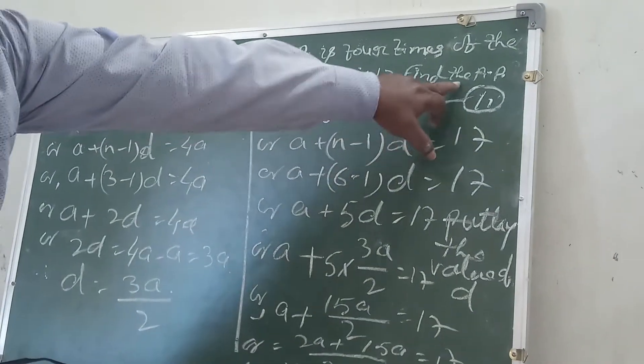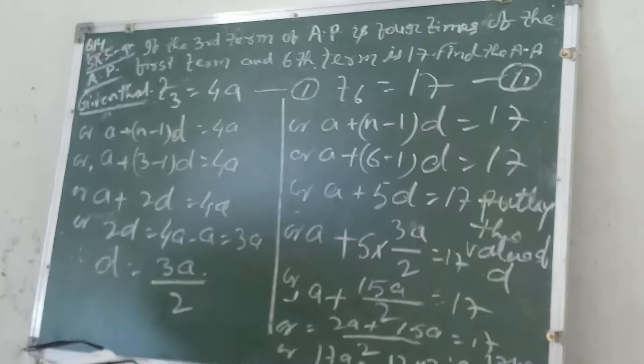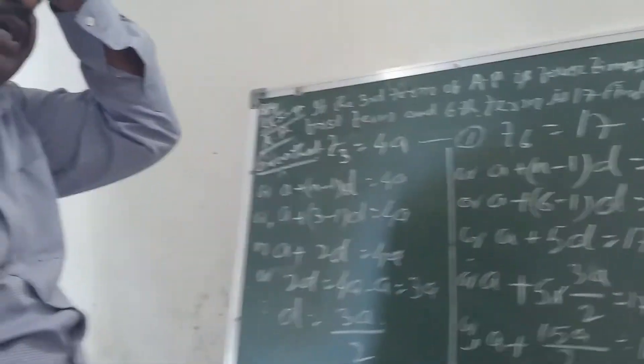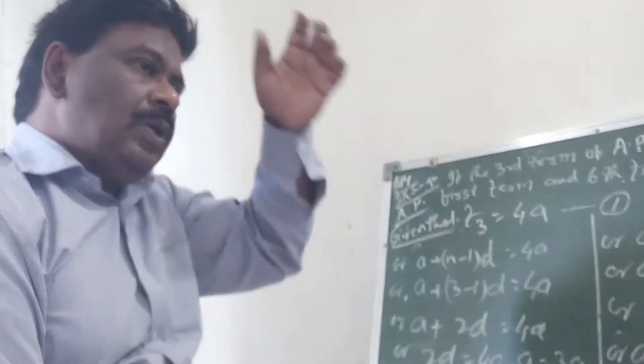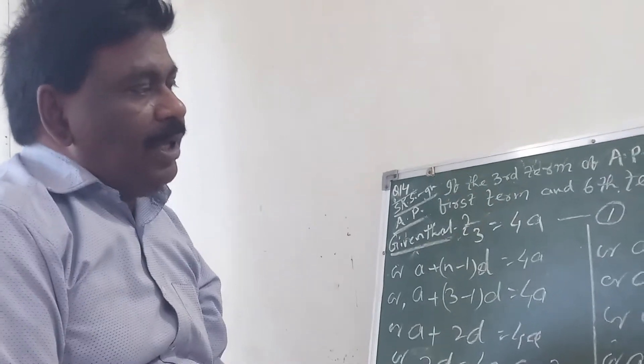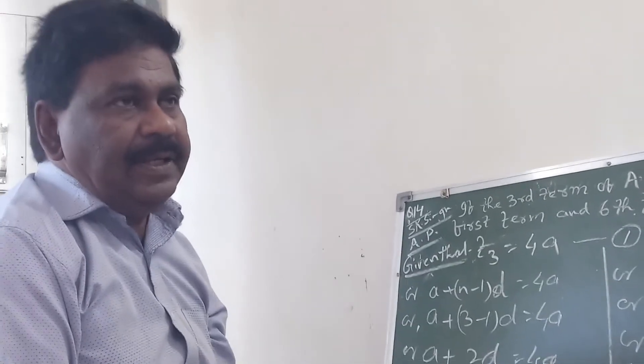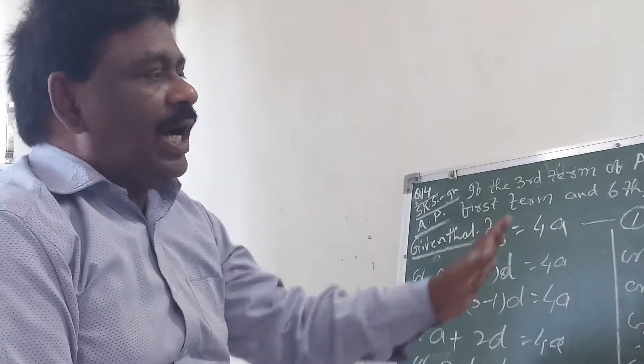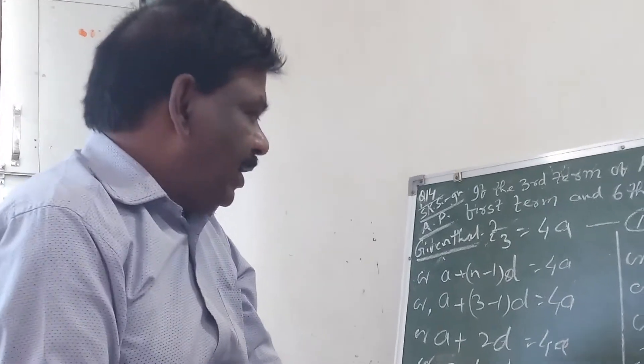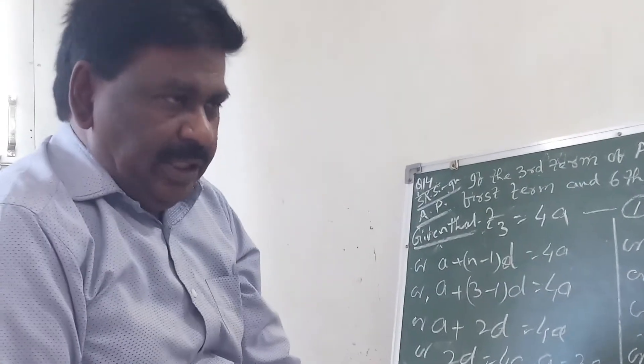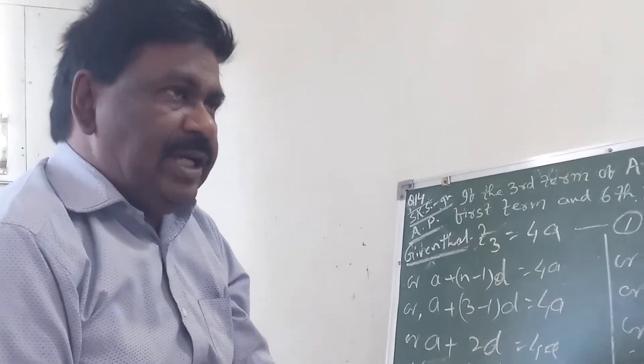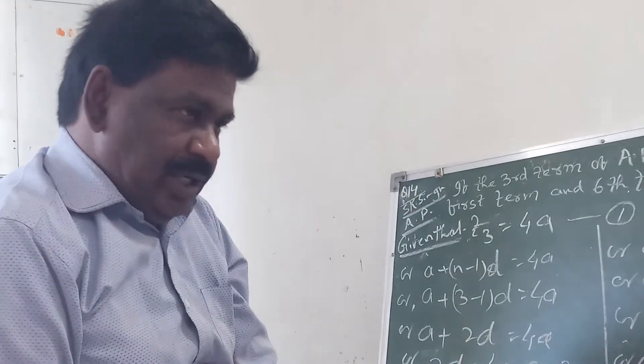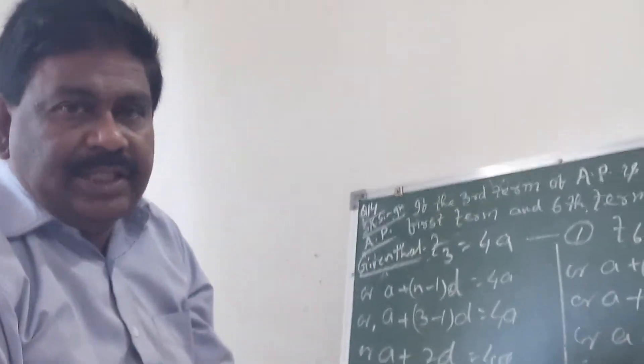We need to find that AP series. We need to show the series with at least 3 or 4 terms: T1, T2, T3, T4.